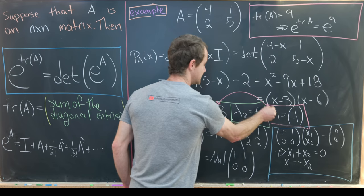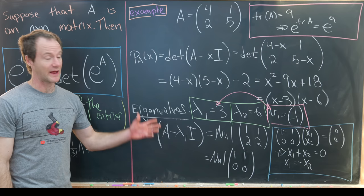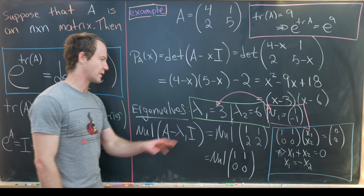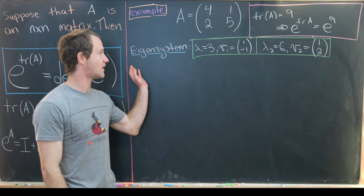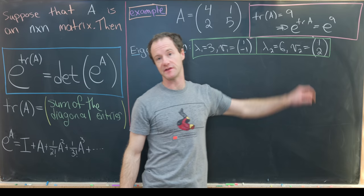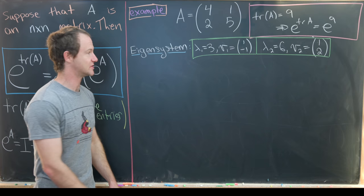For eigenvector associated with λ₂ = 6, it follows essentially the same process — I'll leave that as homework. So our eigensystem is: eigenvalue 3 with eigenvector [1, −1], and eigenvalue 6 with eigenvector [1, 2]. From this eigensystem we know the diagonal form of A and the diagonalizing matrix P, whose columns are the eigenvectors of A.